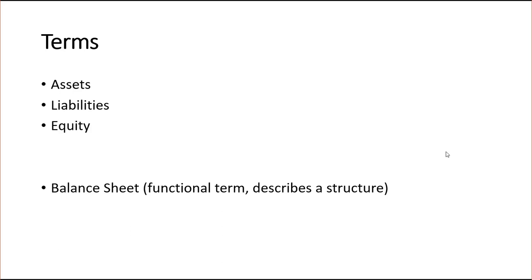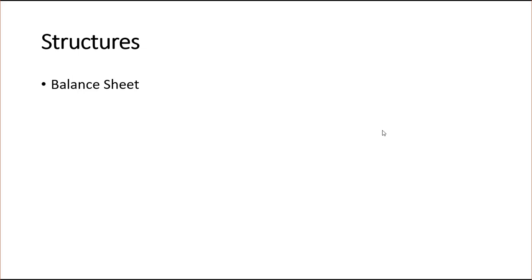The terms are assets, liabilities, and equity. There's one additional term. These are simple terms. There is also a functional term: balance sheet. Balance sheet is a term used to describe a structure, which we're going to define next, that is called balance sheet. So it refers to the structure balance sheet. If you want to refer to it, you have to give it a name, and we have named this structure balance sheet.